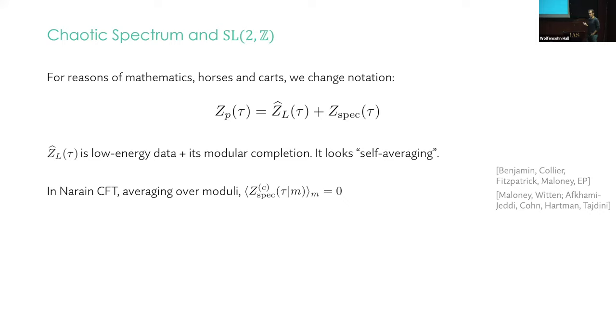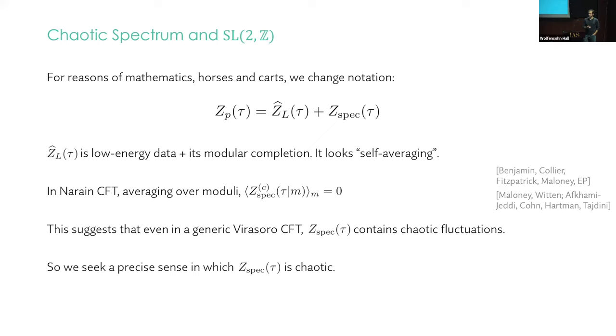It looks self-averaging. Why do I say this? Well, one reason is that if you do this kind of computation in Narain CFT, you can show that averaging over the moduli of the theory sets this extra piece to zero. So this suggests that even in a generic Virasoro CFT with no moduli, Z_spec contains the chaotic fluctuations, which would average to zero over some appropriate sense of average. We're seeking a precise sense in which Z_spec is chaotic.